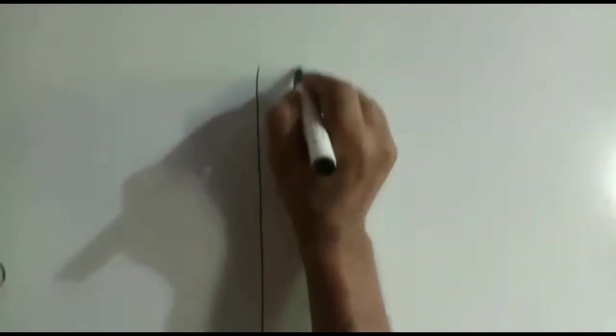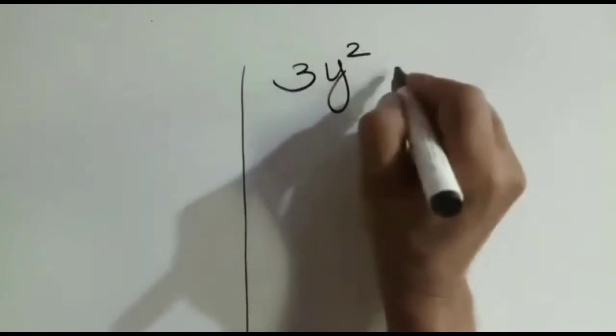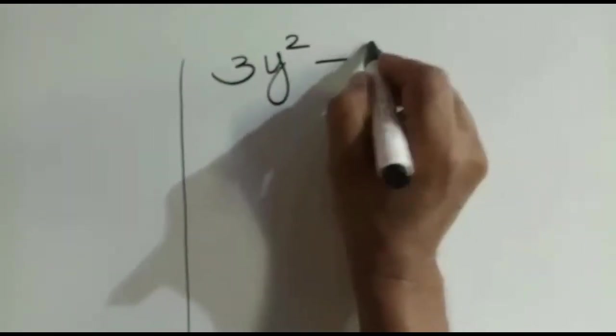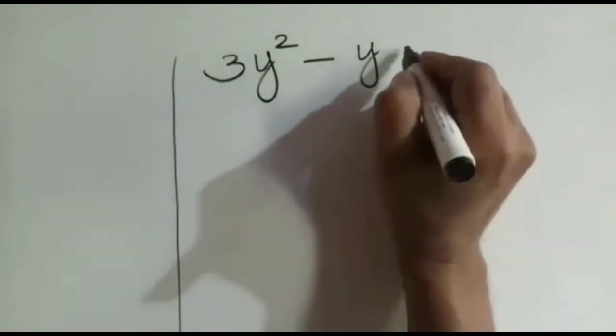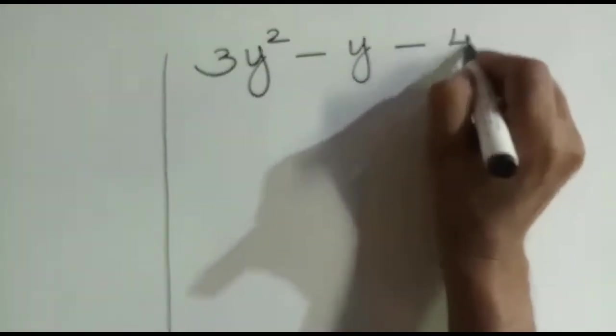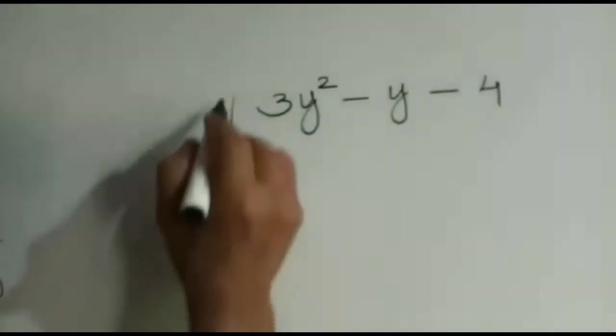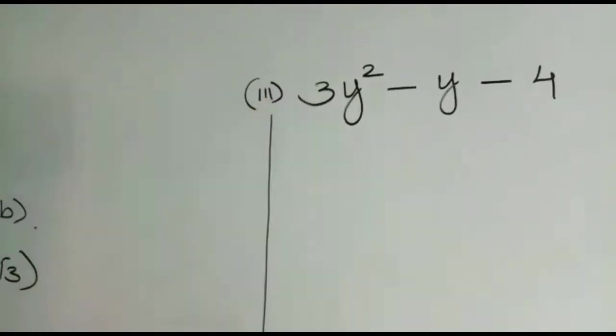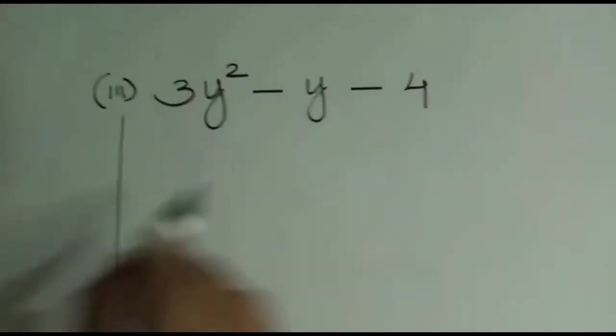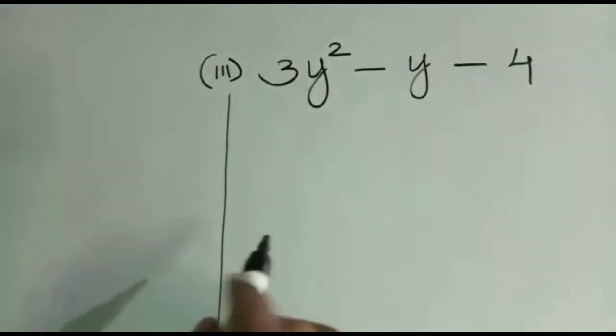Let's see a third case: 3y² - y - 4. Here there are three terms, and by examining we can see this can be factored by splitting the middle term, because it does not match any identity.